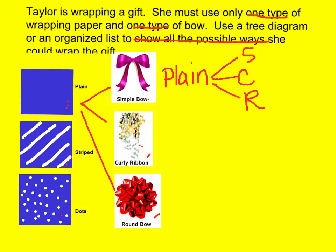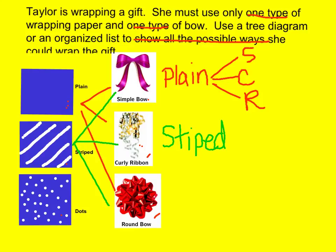Now I'm going to use a different color pen here so you can follow this. The same thing can happen if I choose striped. I could go striped with simple, striped with curly, or striped with round. So over here I'm going to write striped — and this is my tree — striped with simple, striped with curly, and striped with round. This is working out fine since no two bows start with the same letter, so there are no duplicate letters.